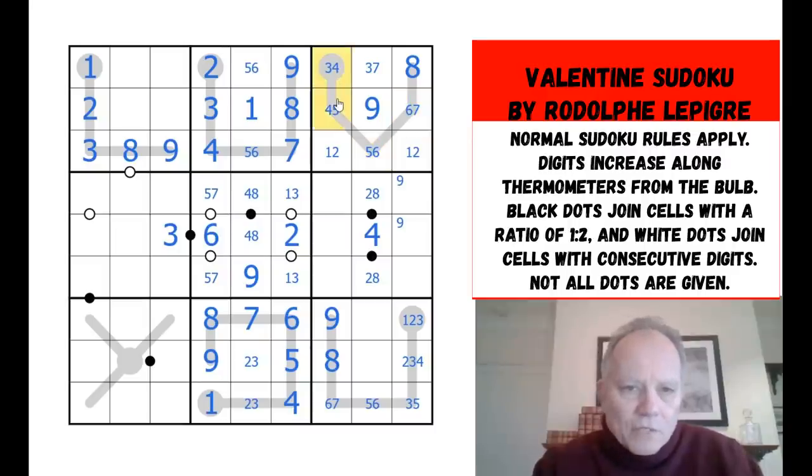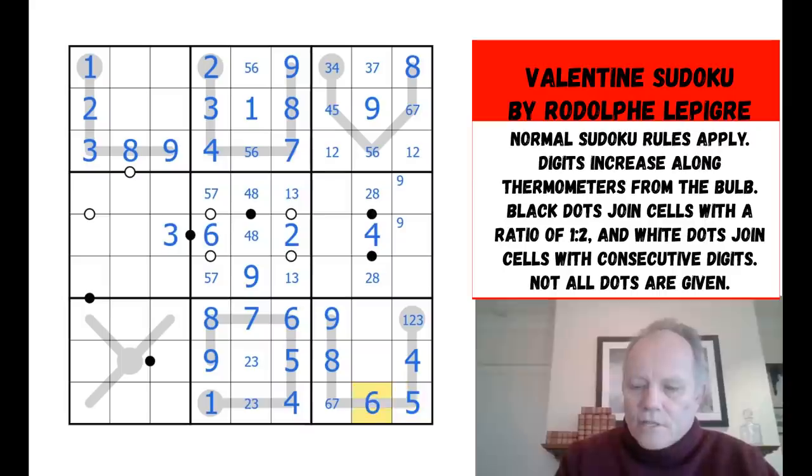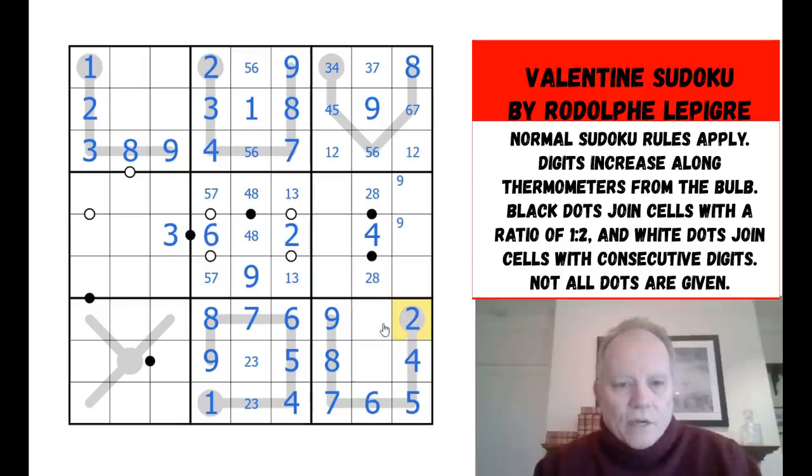And now we can fill in the beginning of that thermo as one and two since the three is there. So that's really helped. That fixes those bulbs. This is now a two, three pair. We have five or six there. One in the box must be in that cell. Two, nine, eight, four. Right. This cannot be a four. So it's three, five, six, or seven.